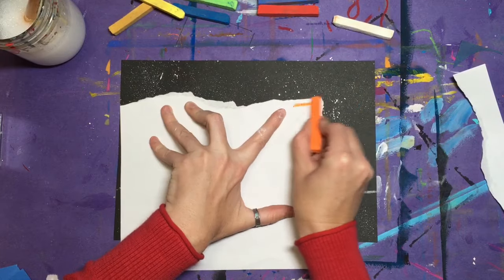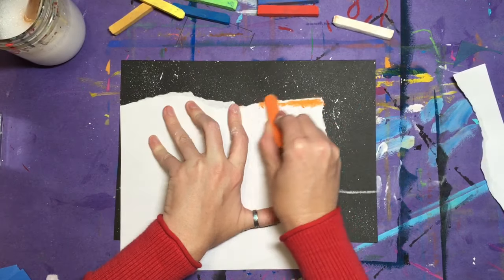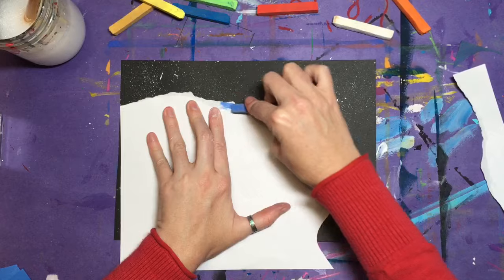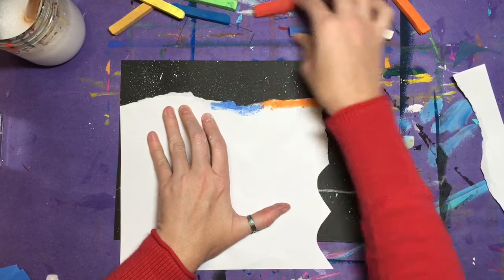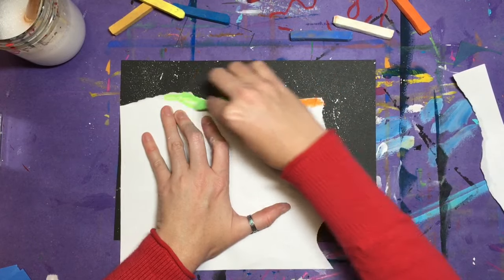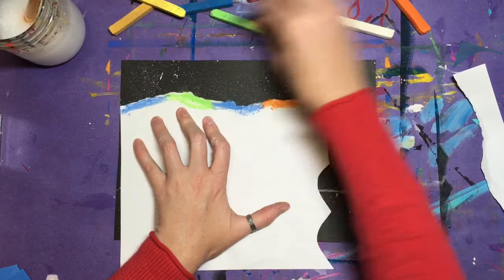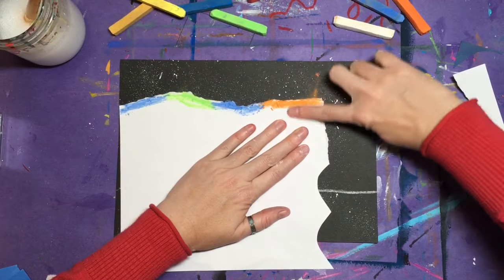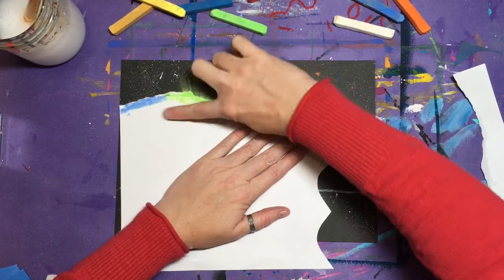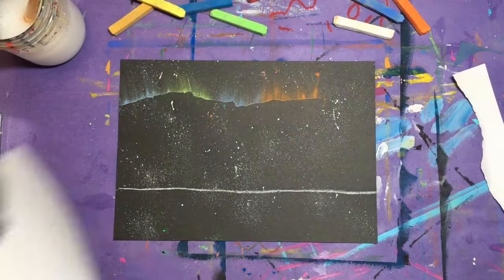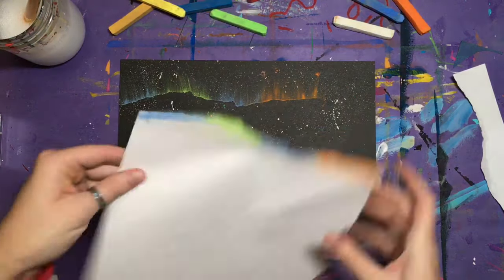Choose the colors of chalk that you want for your lights, and add that to the edge of your scrap paper. Then using one finger brush up onto your black nighttime sky. This is going to give us that glowing effect of the northern lights.